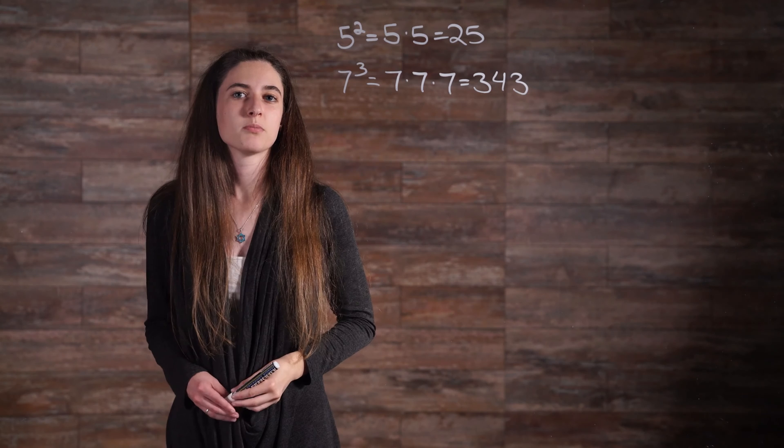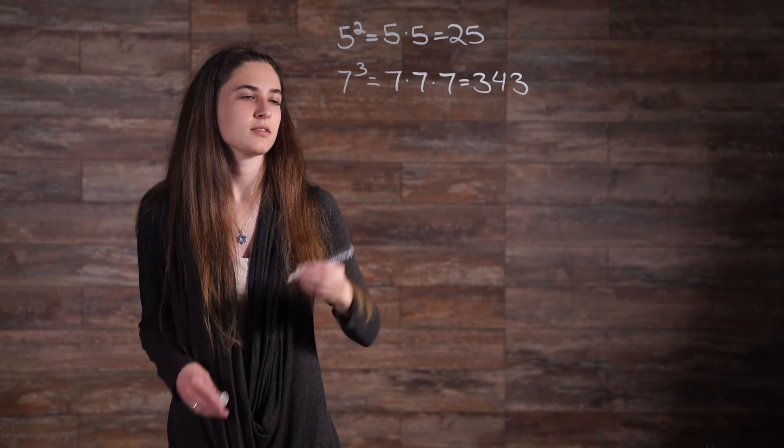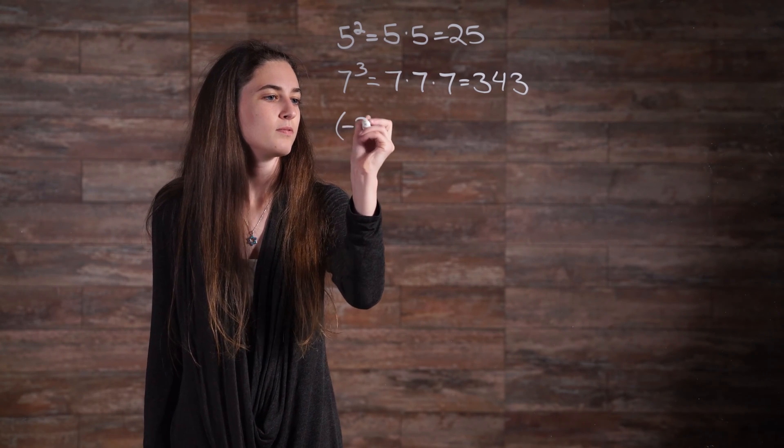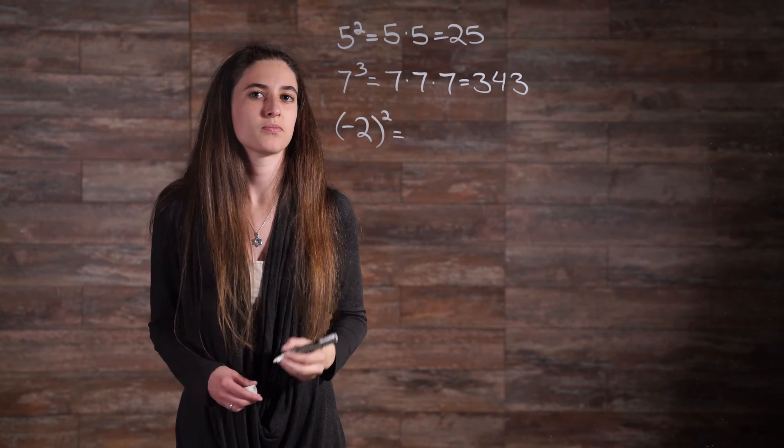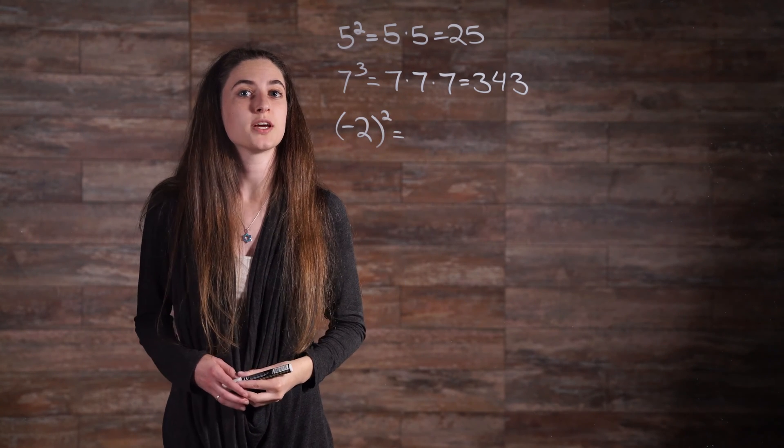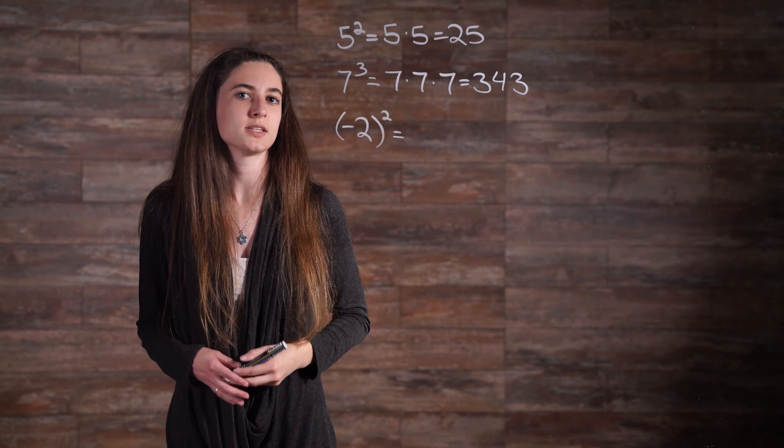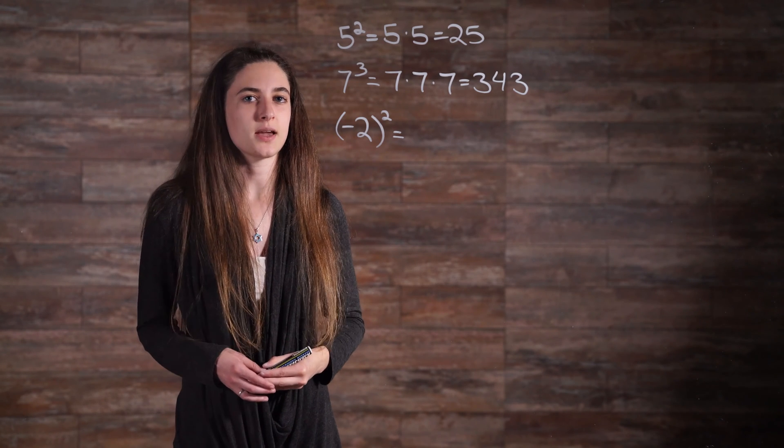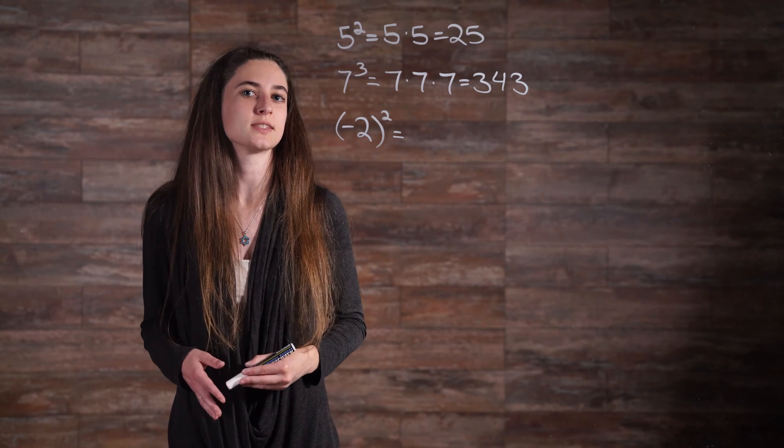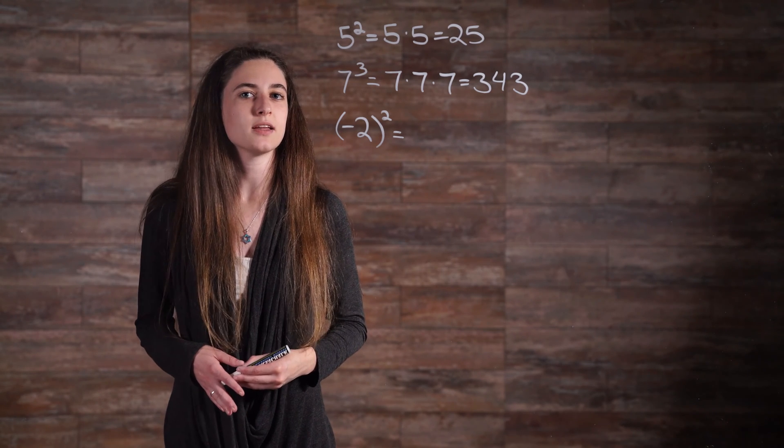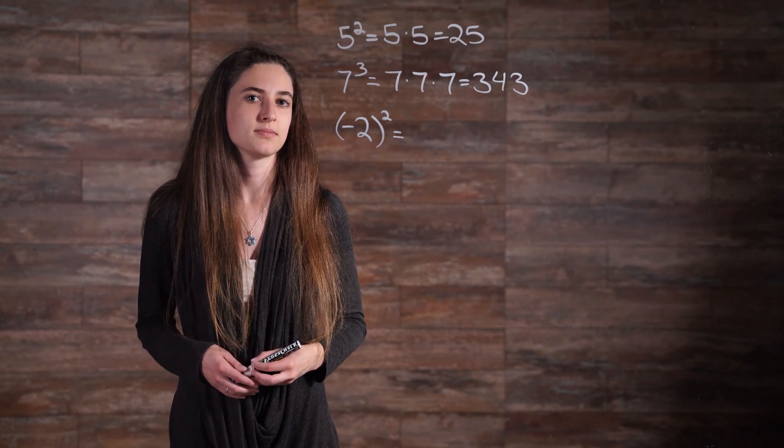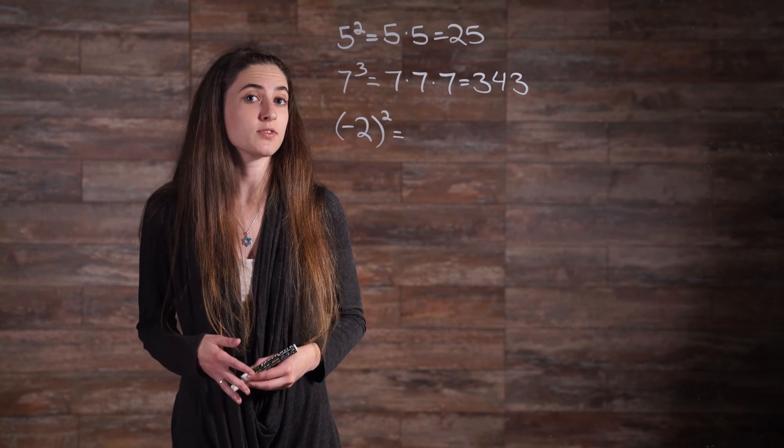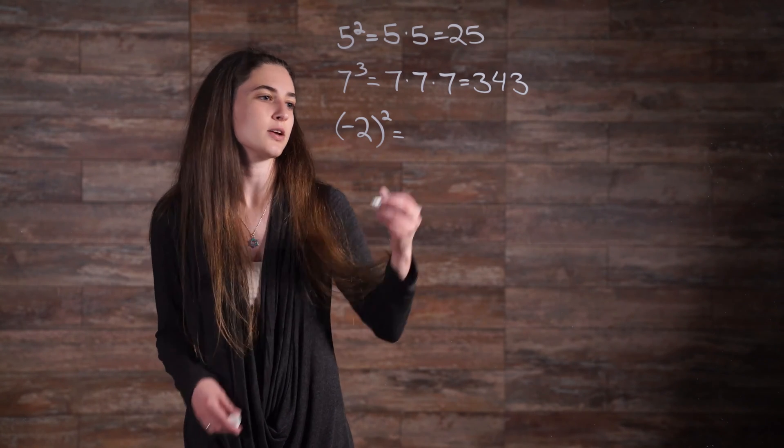Let's try another one, but this one will look a little different. Negative 2 squared. It is important to point out that parentheses are being used with this example to define the base. Negative 2 is being raised to the second power. The interpretation is the same. Simply multiply negative 2 by itself twice. Multiplying two negative numbers using parentheses results in a positive value.